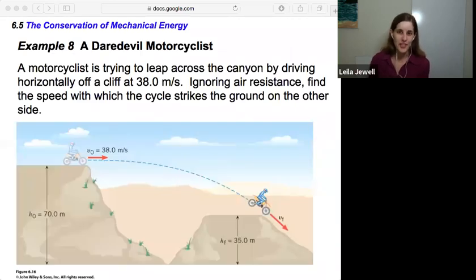Let's look at another example of this with a daredevil motorcyclist. A motorcyclist is trying to leap across the canyon by driving horizontally off a cliff at 38 meters per second. Ignoring air resistance, find the speed with which the cycle strikes the ground on the other side. Now this could have been a kinematics problem in that we could figure out how far the motorcycle goes, or even perhaps how fast it's going to strike the other side. But here we're going to just be able to consider it using our conservation of mechanical energy.